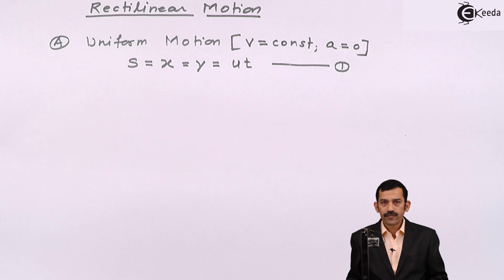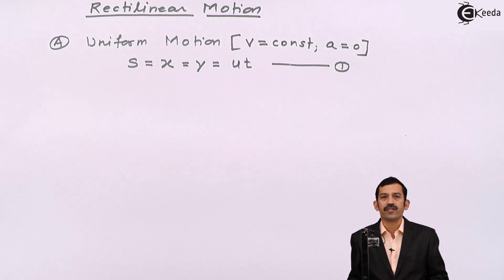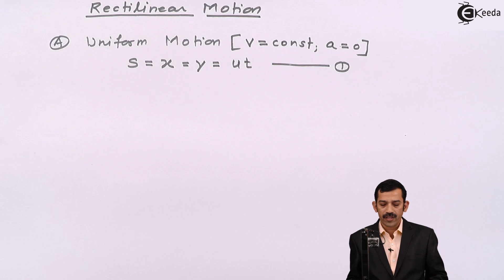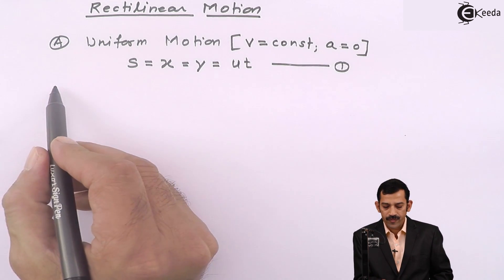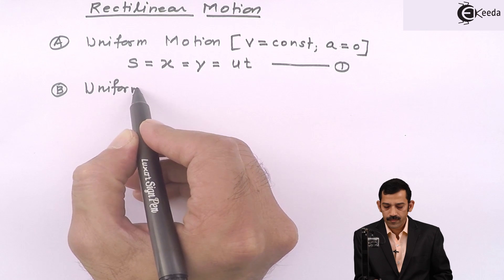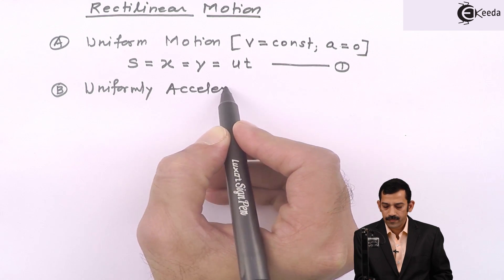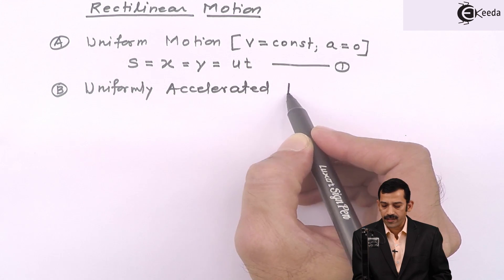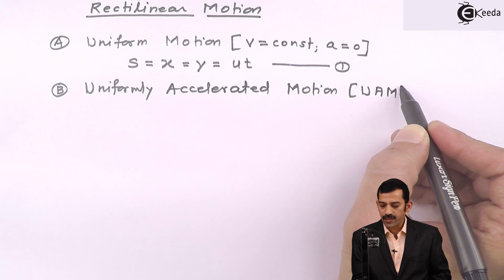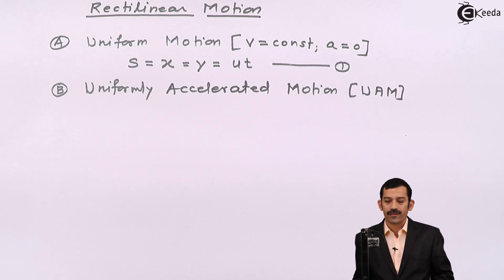If velocity does not remain constant but varies with respect to time — that is, dV/dt — and this rate of change is constant, meaning acceleration remains constant, then the motion is called uniformly accelerated motion, which is the second type of motion. In short, this motion is written as UAM: motion in which acceleration remains constant.